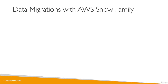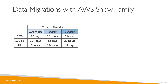Why do we want to do data migration with the AWS Snow family? If we look at the time it takes to transfer a lot of data over the network, it can take a very long time. For example, if we want to transfer 100 terabytes over a 1 gigabit per second network line, it will take us 12 days to achieve it. If we do a petabyte, it will take forever. Sometimes we just want the data to get to AWS fast.